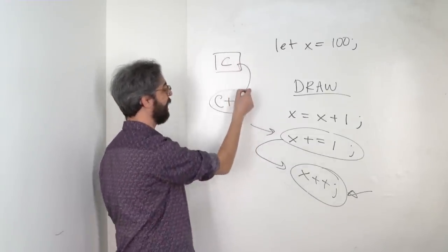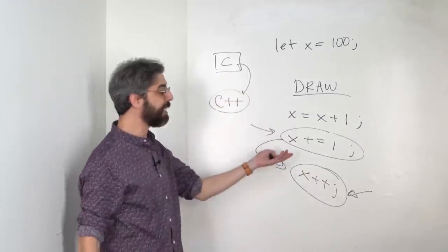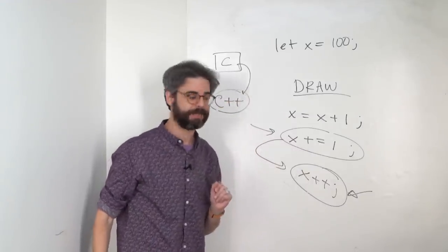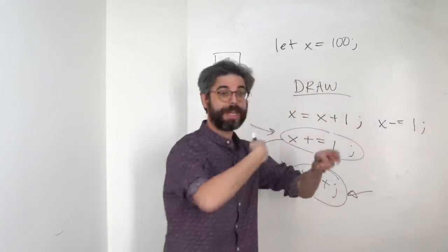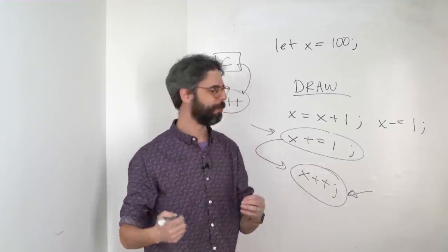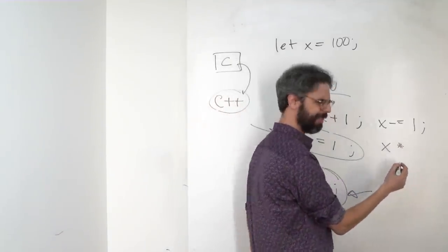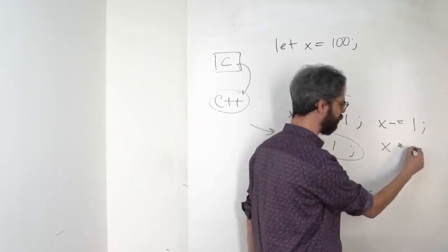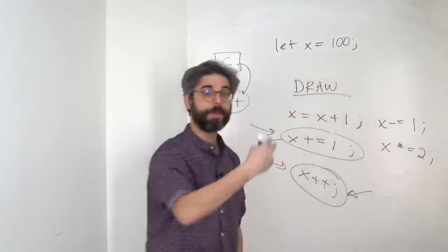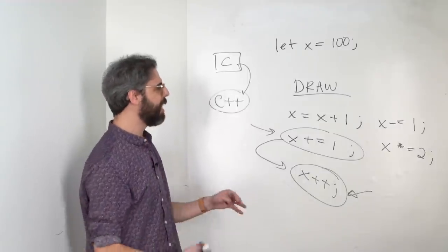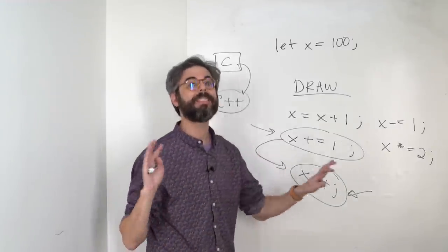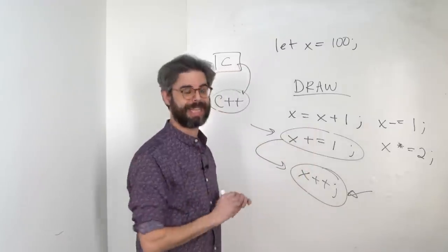This can also be done with minus. x minus equals 1 would be decrementing x by 1. You could do this with multiplying x times or asterisk equals 2. That would be doubling x every frame. Slash equals would be divide. And there are more and more kinds of operations like this.